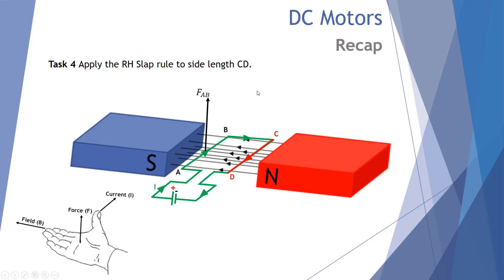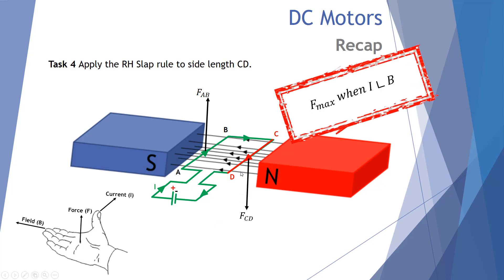Let's apply the same right-hand slap rule to side length CD. We now have current coming out of the page, magnetic field from right to left. Put your thumb out of the screen towards you, fingers moving north to south from right to left, and the palm will be pushing down. So the right-hand slap rule predicts a force on CD down the page. These forces are maximum when the current in both AB and CD is perpendicular to the magnetic field.